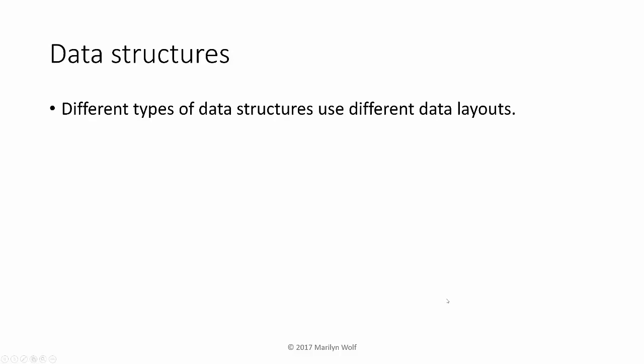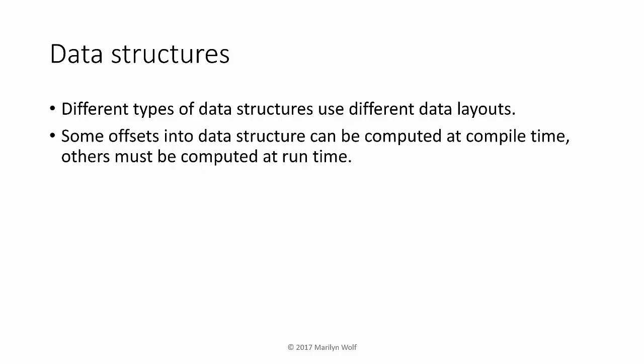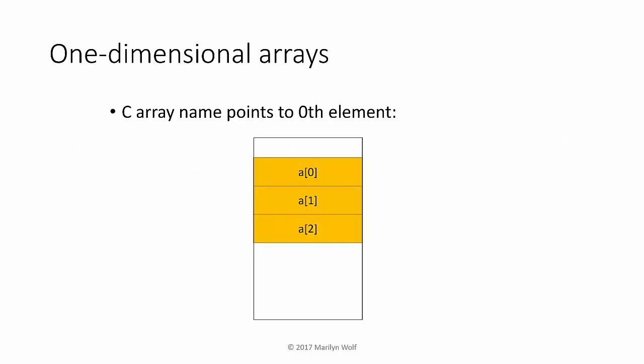We also need to be able to implement data structures such as arrays and structs. High-level language programs include several different types of data structures — arrays, structs, and so forth — which require different data layouts and different forms of address computation. In some cases such as structs we can compute the offsets at compile time; in others such as arrays we need to compute the offset at run time. In C, the name of the array is essentially a pointer to the zeroth element, and we compute the address of an element by adding the base address to the offset and then dereferencing that pointer.